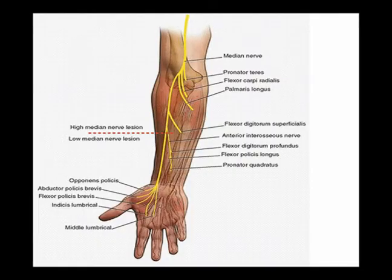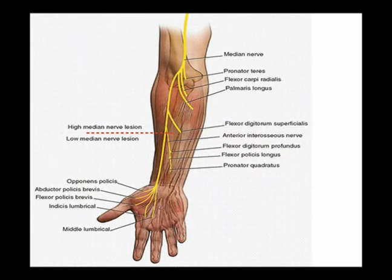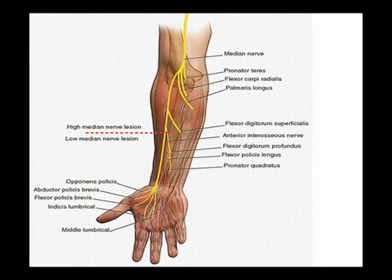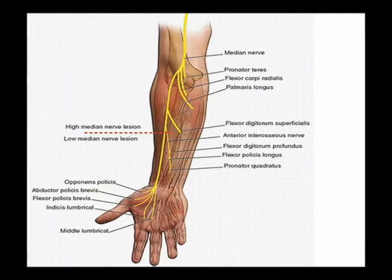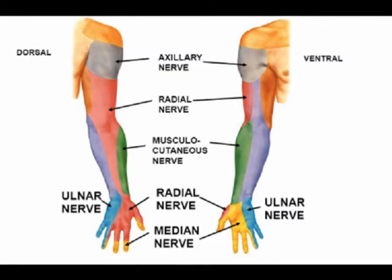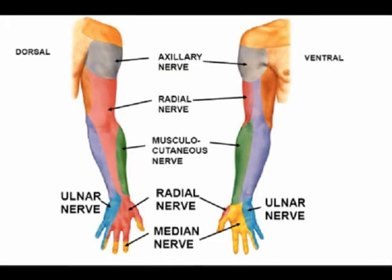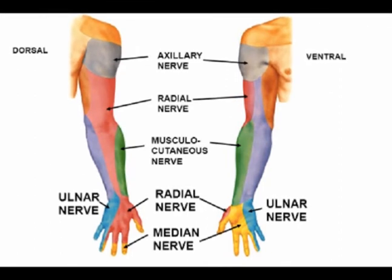Again, the median nerve is the motor innervation for the wrist flexors, for the thenar muscles, and for two lateral lumbricals that move the second and the third finger. It is the sensory innervation for the lateral half of the palm, the first three fingers, and the lateral side of the fourth finger.